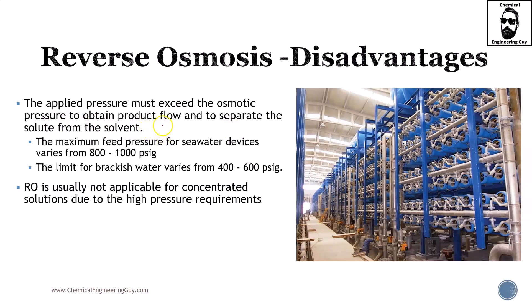The applied pressure must exceed the osmotic pressure to obtain product flow and separate the solute from the solvent. The maximum feed pressure for seawater devices can range from 800 to 1000 psi, while brackish water varies from 400 to 600 psi. RO is usually not applicable for very concentrated solutions — seawater is about 3.5%, but solutions around 10–30% concentration would require extremely high, potentially impossible pressures.